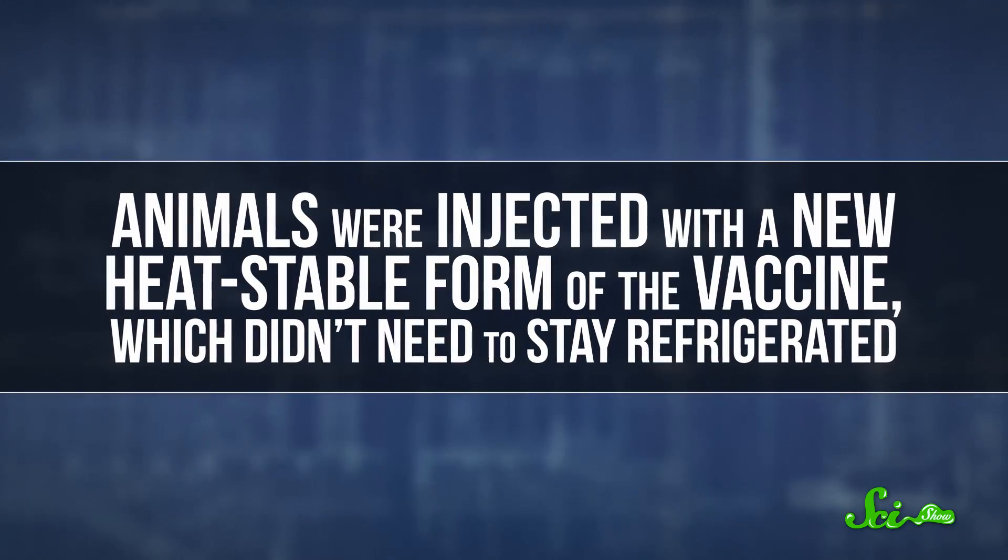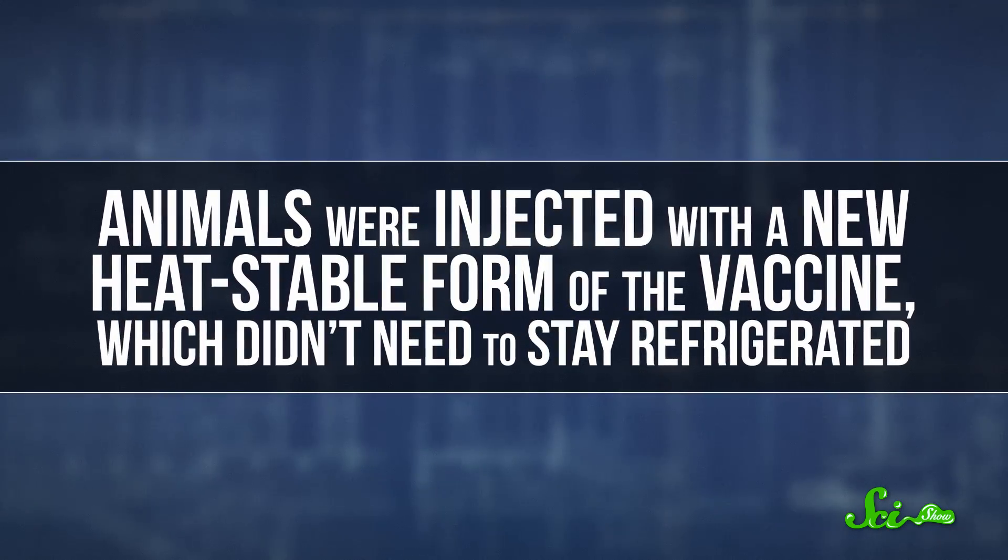Researchers studied how the virus worked and spread, and used mathematical models for more strategic vaccination, rather than trying to vaccinate as many cattle as possible. Animals were injected with a new, heat-stable form of the vaccine, which didn't need to stay refrigerated.